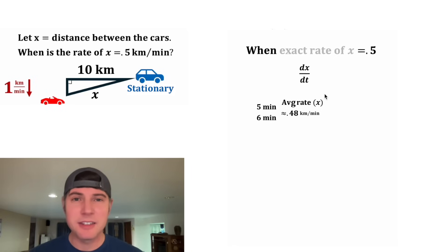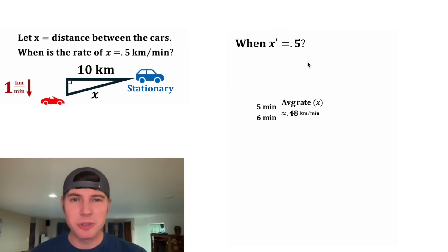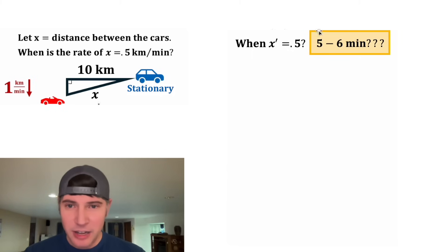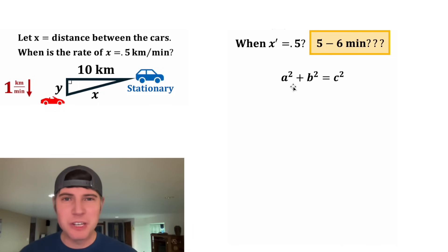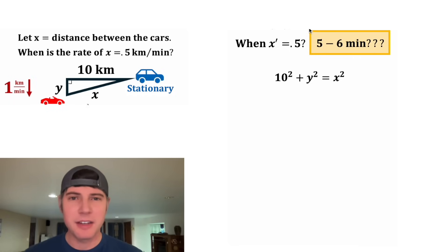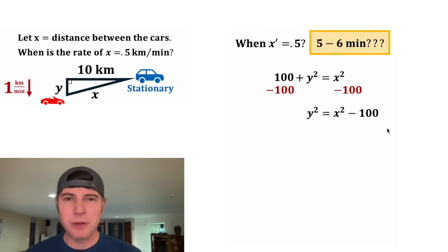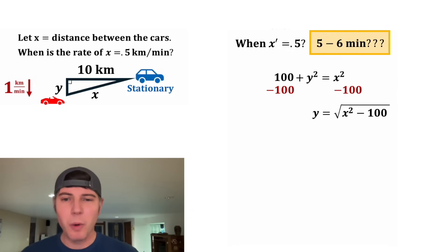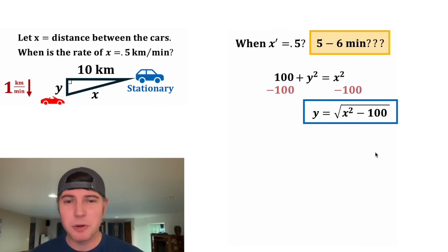We're going to call the exact rate of x dx/dt, and for this video I'll just call it x prime. So ultimately, we want to know when x prime equals 0.5 — I'm guessing somewhere between five and six minutes. Now let's call the distance the red convertible sports car travels y, and use the Pythagorean theorem a² + b² = c², where a equals 10, b equals y, and c equals x. Solving for y as a function of x: subtracting 100 from both sides gives y squared equals x squared minus 100, so y equals the square root of x squared minus 100.